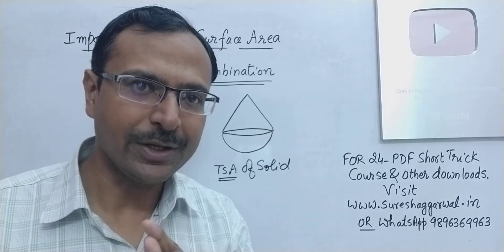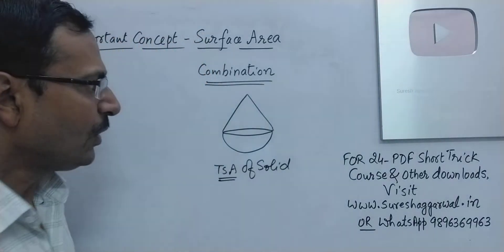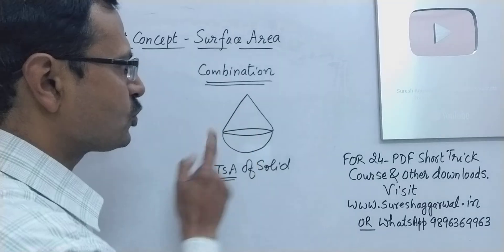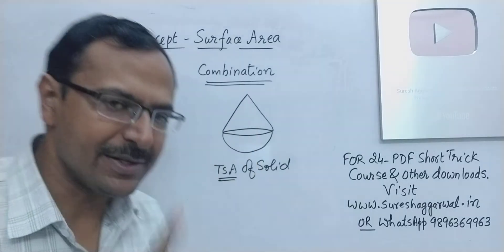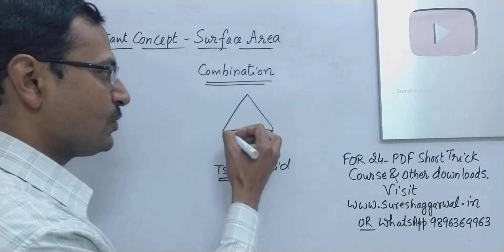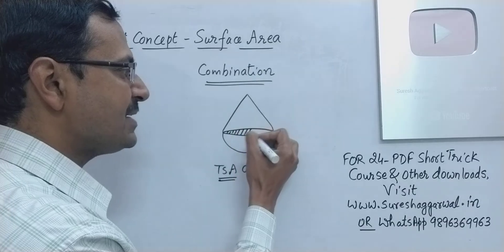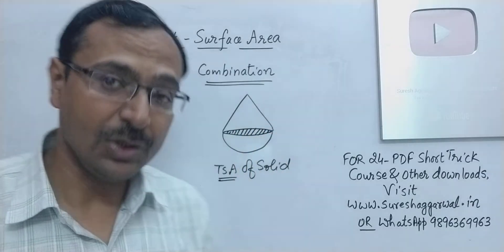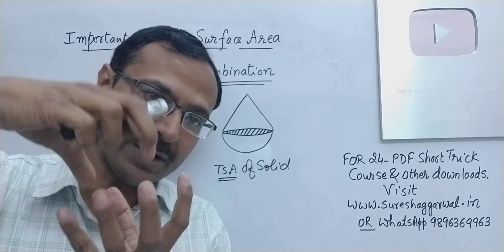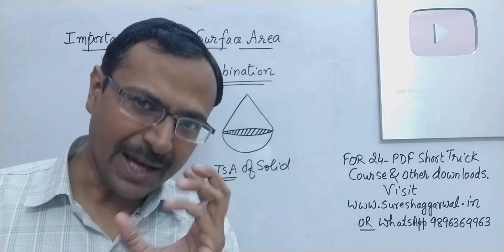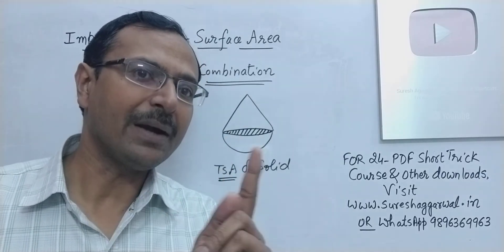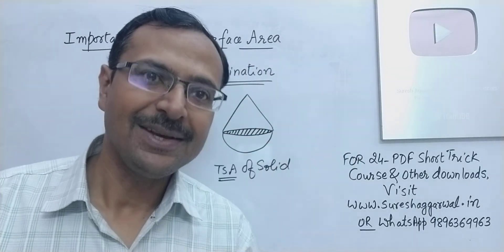If this particular solid is produced by combining these two particular solids, then the base which I am shading right now, this base, this is not visible because that's where the two solids are combined together and that particular circular part goes inside the solid.